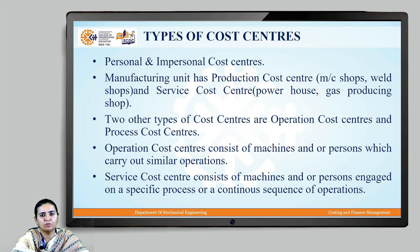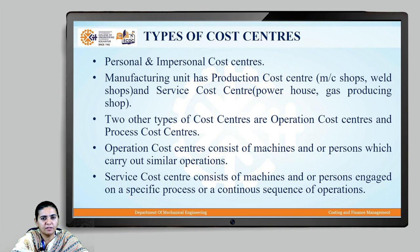Let us discuss the types of cost centers. We have personal cost centers and impersonal cost centers. A personal cost center is one where costs are accrued with reference to a person or a group of persons. An impersonal cost center is where costs are accrued with reference to equipment, a place, machinery, or a group of these. A manufacturing unit usually has a production cost center applicable to machine shops, weld shops, etc., and a service cost center used for powerhouses and gas-producing shops.